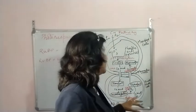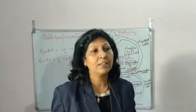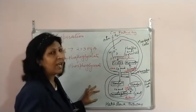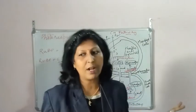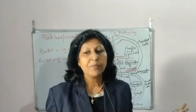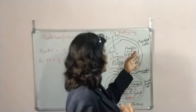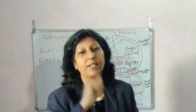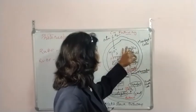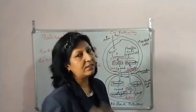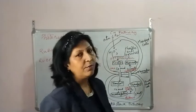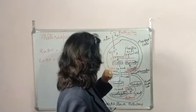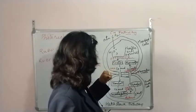In C4 plants, oxaloacetic acid is the first compound formed. The CO2 acceptor is phosphoenol pyruvate, abbreviated as PEP. PEP is a three-carbon compound and is the CO2 acceptor in the C4 pathway. This pathway is also known as the Hatch and Slack pathway — you may be asked about it in exams by either name.